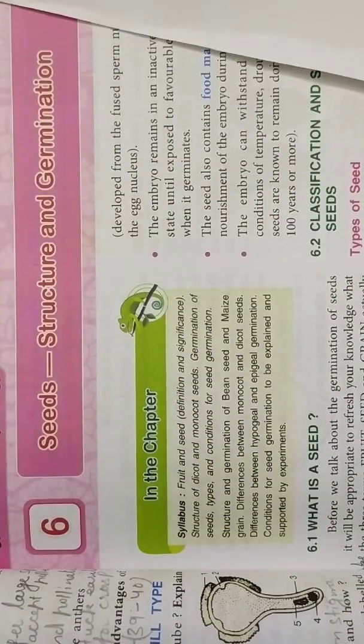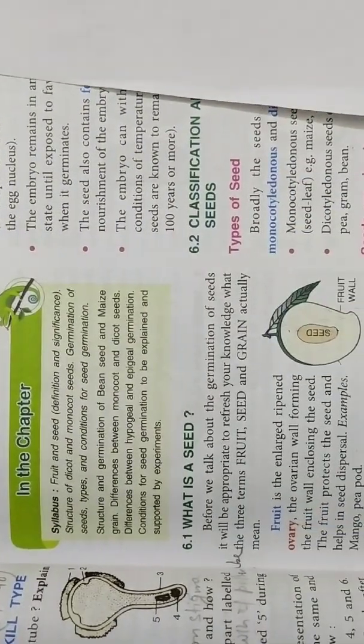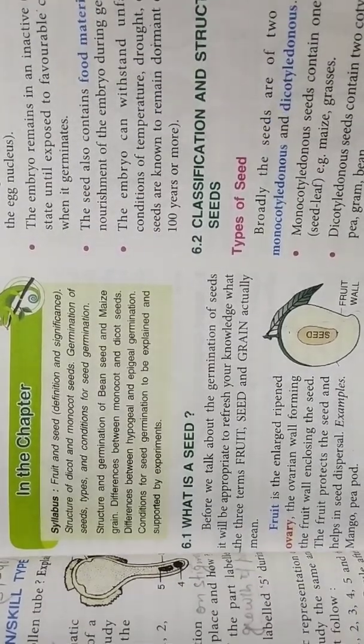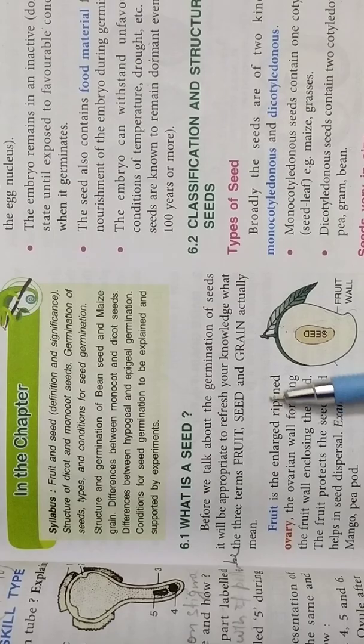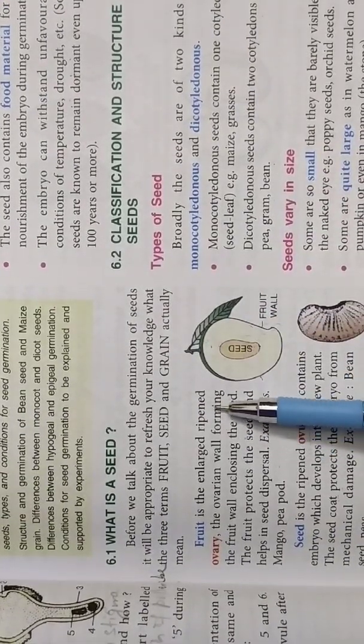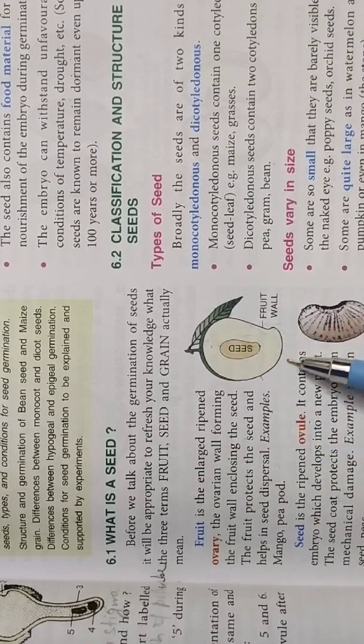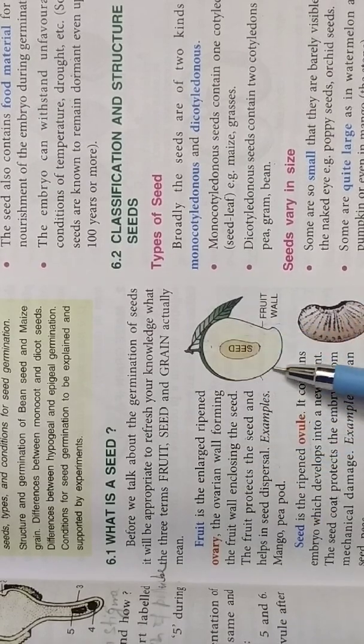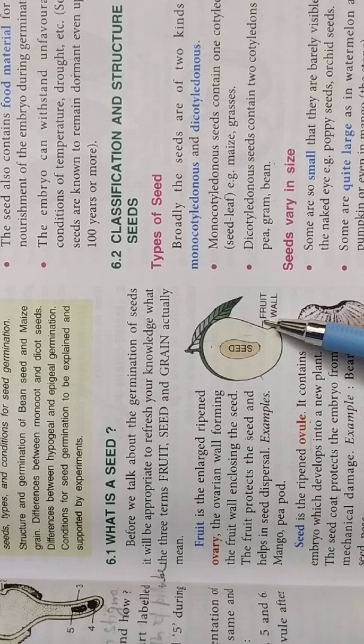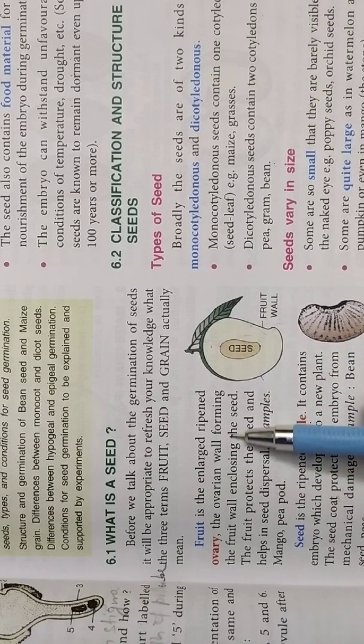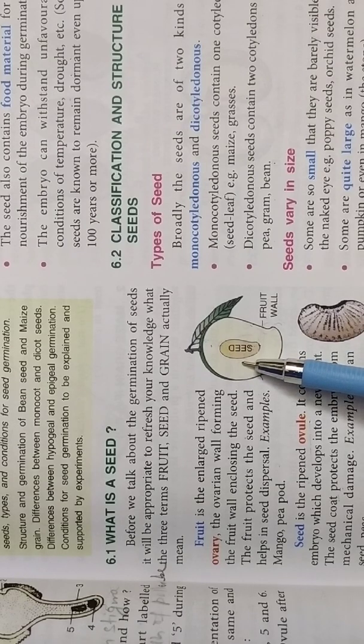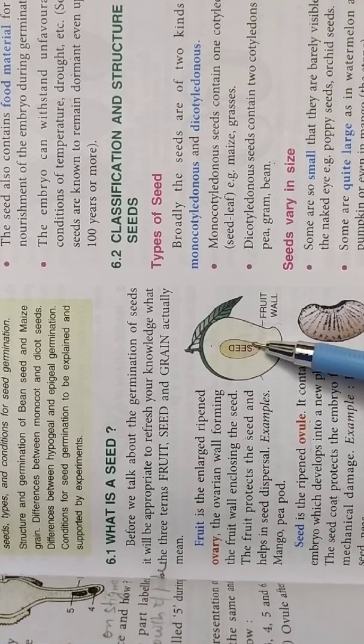Now in your book they have explained first of all what is a seed. So before we talk about germination of seeds it will be appropriate to refresh your knowledge what the three terms fruit, seed and grain actually mean. Fruit is the enlarged ripened ovary. All of you know this is the enlarged ripened ovary. Now it has become fruit. And the wall of the ovary forms the wall of the fruit. We now call it pericarp. The ovarian wall forming the fruit wall enclosing the seed. Inside there is seed. And thus the ovule wall will form the wall of the seed.